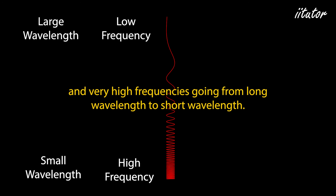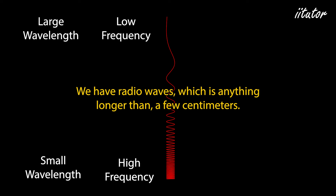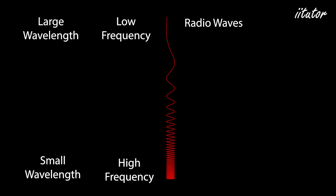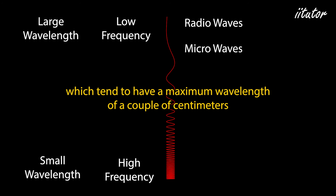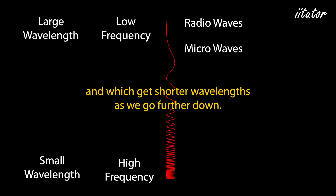Going from long wavelength to short wavelength, we have radio waves — anything longer than a few centimeters. We have microwaves, which tend to have a maximum wavelength of a couple of centimeters and get shorter wavelengths as we go further down.